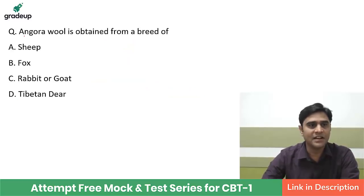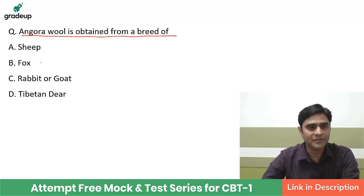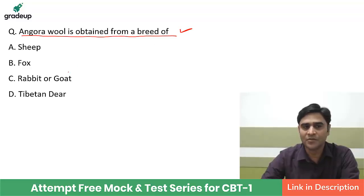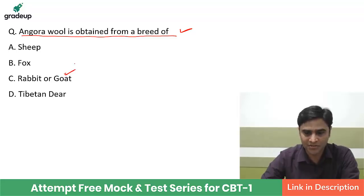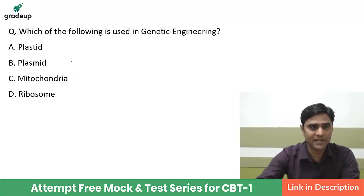The first question is: Angora wool is obtained from which of the following — a breed of sheep, fox, rabbit or goat, or Tibetan deer? Your answer should be Angora wool, which is the best quality of wool, and it is obtained from a goat. So this is a very important question for your exam.